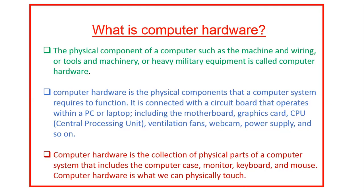By the third way you can define computer hardware like this: computer hardware is the collection of physical parts of a computer system that includes the computer case, monitor, keyboard, and mouse — computer hardware is what we can physically touch. So in a simple way, the physical components of a computer system that we can touch, feel, and see is called computer hardware.